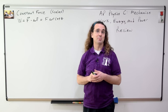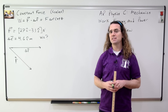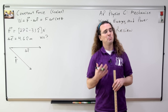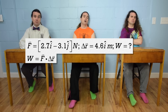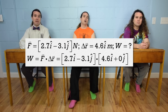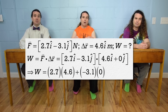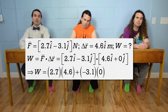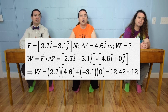Let's do a simple example. If the force acting on an object is 2.7i minus 3.1j newtons and the displacement of the object is 4.6i meters, Billy, what is the work done by the force on this object? Well, work equals the dot product of force and displacement, so it equals the dot product of 2.7i minus 3.1j and 4.6i plus 0j. Multiply the i's together, multiply the j's together, and take the sum. So it is 2.7 times 4.6 plus negative 3.1 times 0, or 12.42, which is 12 with two significant digits. And it's in joules.